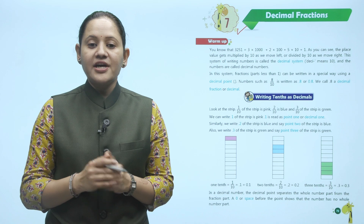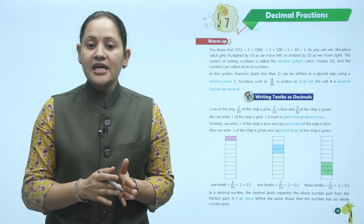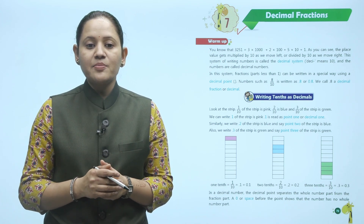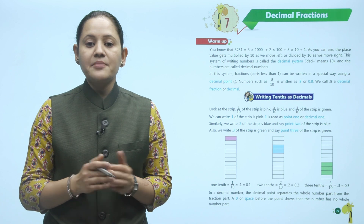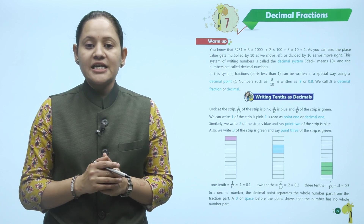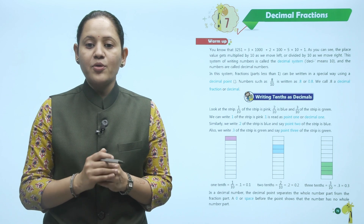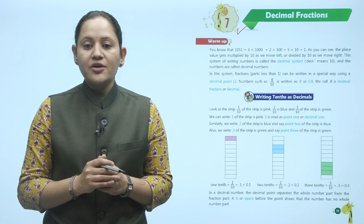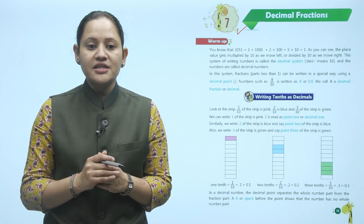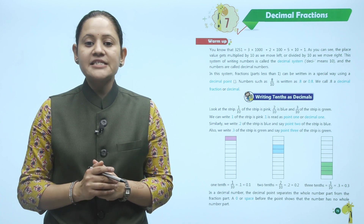In this system, the fraction part less than 1 can be written in a special way using a decimal point. A number such as 8 upon 10 is written as 0.8. We call 0.8 a decimal fraction, or simply a decimal.